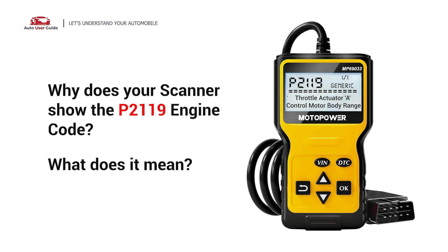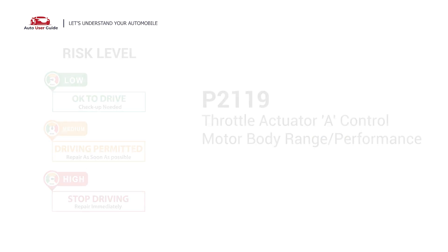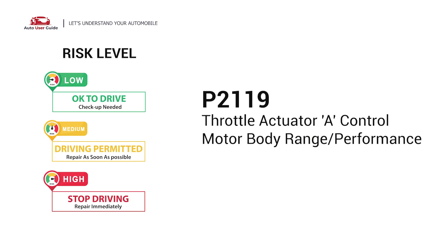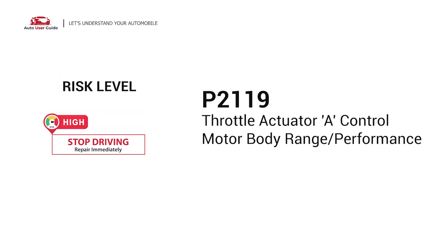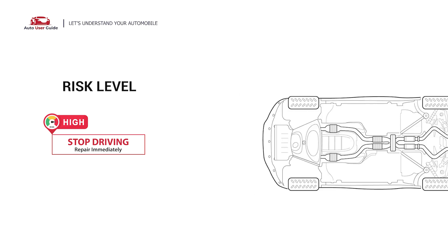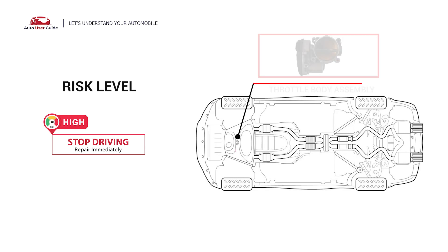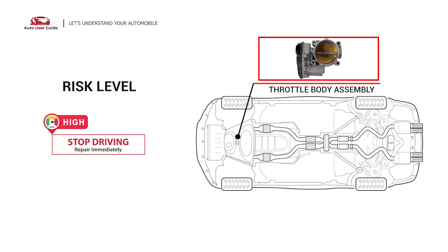Why does your scanner show the P2119 engine code? What does it mean? P2119 is a diagnostic trouble code for throttle actuator control motor body range performance. It means that the electronic control module, ECM, detects a fault in the throttle control system.